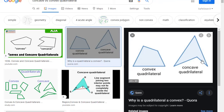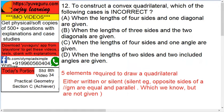Also, one more condition is, at least one angle in concave quadrilateral is the reflex angle, means more than 180 degrees.